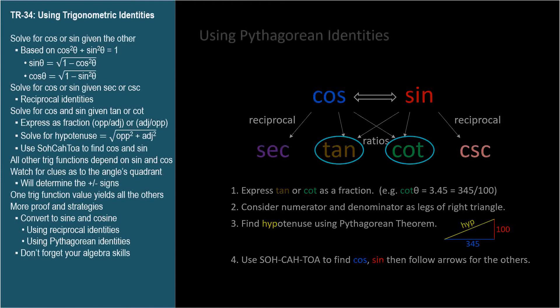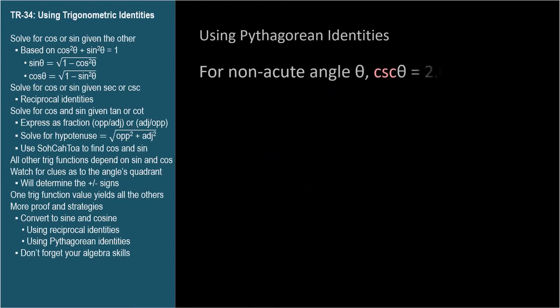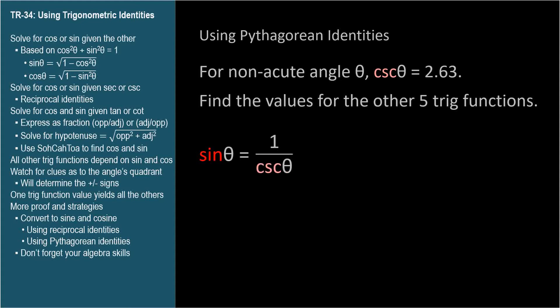If the cosecant of a nonacute angle is 2.63, what are the values of the other trig functions for this angle? Cosecant is 1 over sine, so sine is 1 over cosecant. 1 over 2.63 equals 0.380 to three decimal places.